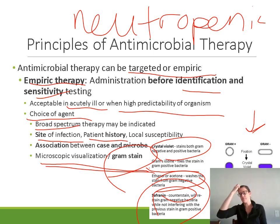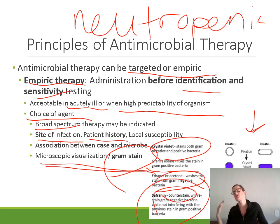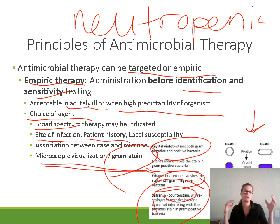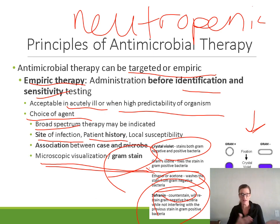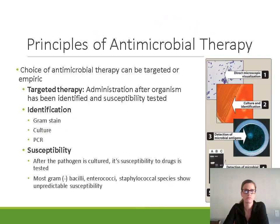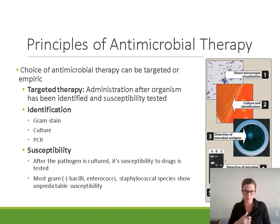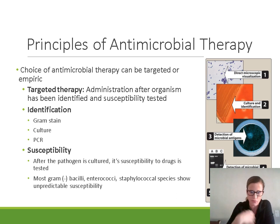So the gram stain is really quick — you add stain, fix it, wash it off, add counter stain — and then you can look under the microscope and see: is this gram-positive or gram-negative? If you're considering E. coli, Strep, or Staph, you can do your gram stain and microscopic visualization to help guide your empiric therapy choice. That was all for empiric therapy.